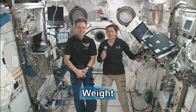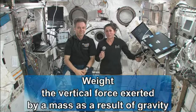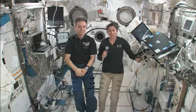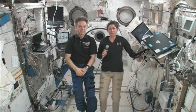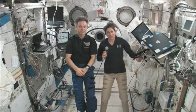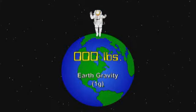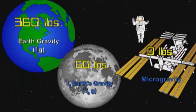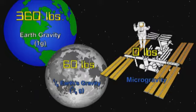So what is weight? Weight is the vertical force exerted by a mass as a result of gravity. Weight also means the strength of the gravitational pull on the object — that is, how heavy is it? Weight is dependent on gravity. On Earth, in a 1G environment, an astronaut in his space suit would weigh 360 pounds. On the Moon, in 1/6 of Earth's gravity, the astronaut would weigh 60 pounds. In orbit, he would weigh zero pounds, because weight is dependent on gravity and the effect of Earth's gravity is not observed.